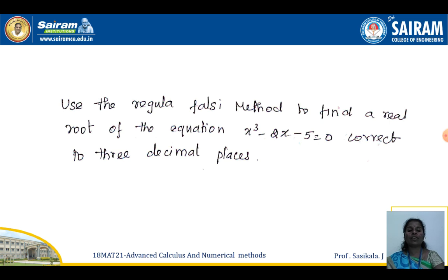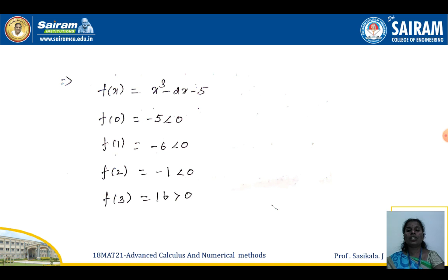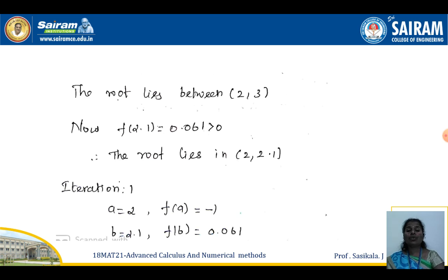The second example: use the Regula Falsi method to find a real root of the equation x³ − 2x − 5 = 0, correct to 3 decimal places. Unlike the previous logarithmic function, this is an algebraic equation. We define f(x) = x³ − 2x − 5 and check for sign changes by substituting values: f(2) is negative and f(3) is positive, so the root lies between 2 and 3.